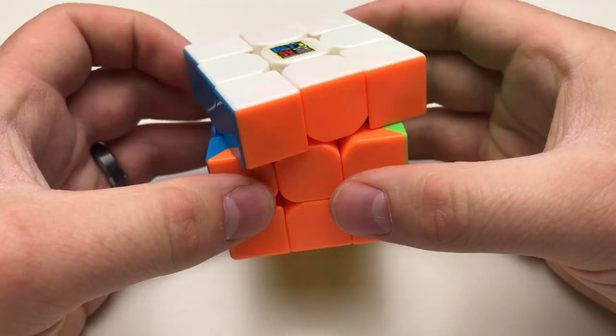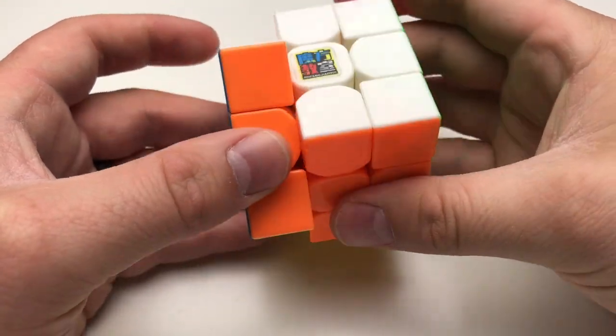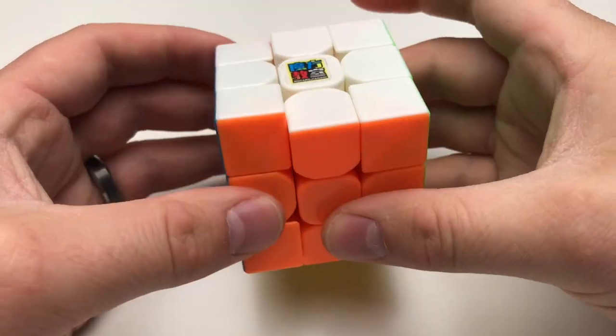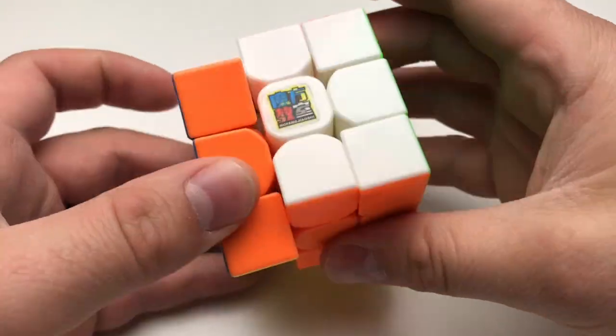So again, it's not that bad. Corner twisting and corner popping isn't that big of a problem because the tensionings are much tighter. And the corner pieces have this built-out edge, so what that does is it prevents more of the corner twisting.